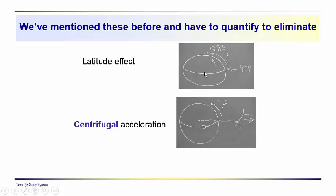We've already talked about these before. We know that we have, you know, we know that depending on your latitude, your acceleration due to gravity is going to vary. You're going to weigh more. The acceleration due to gravity is going to increase from about 9.78 at the equator to 9.83 or so at the poles.